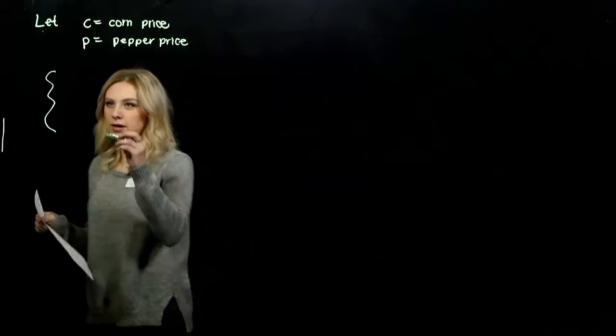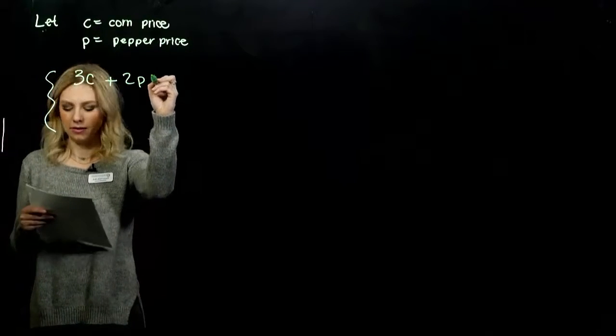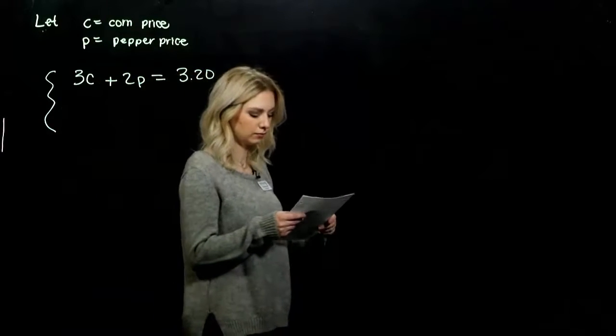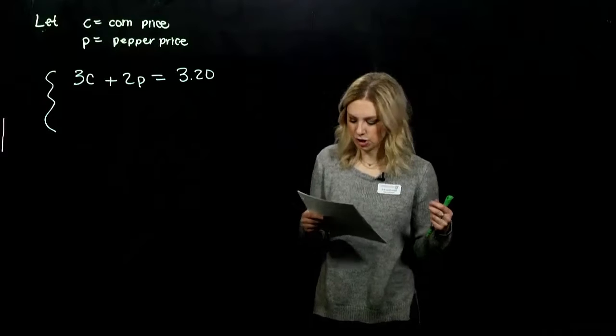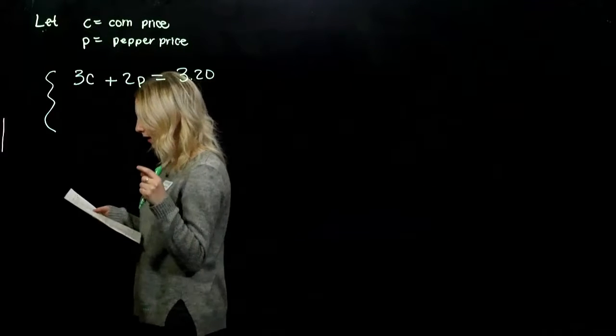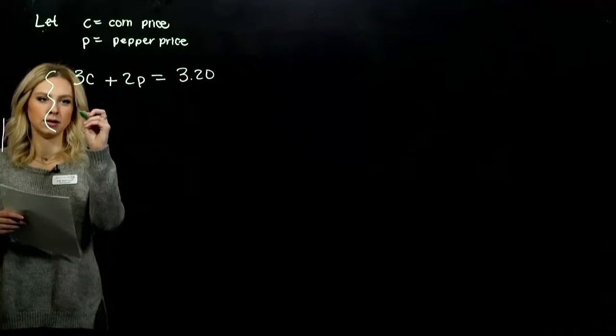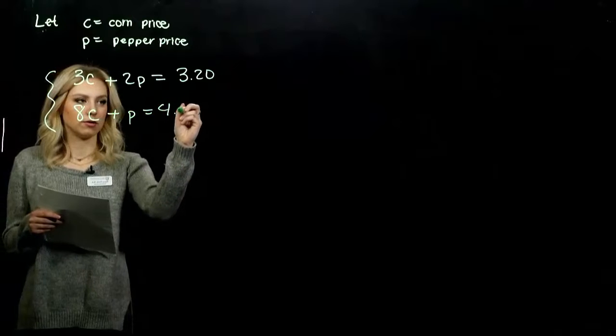So three ears of corn and two peppers all together was $3.20 total price for Shelby's. And Donna, she bought eight ears of corn and one sweet pepper for $4.85. So the system is: 3c + 2p = 3.20 and 8c + p = 4.85.